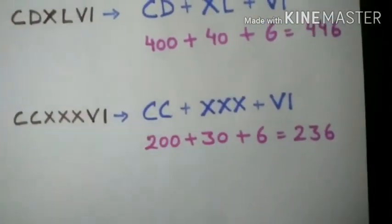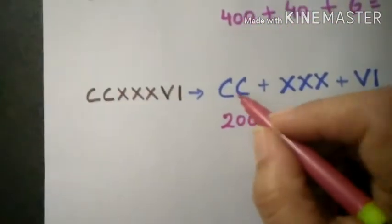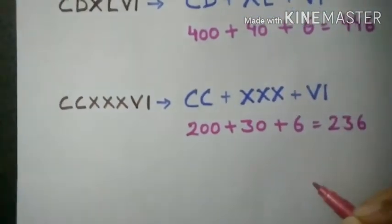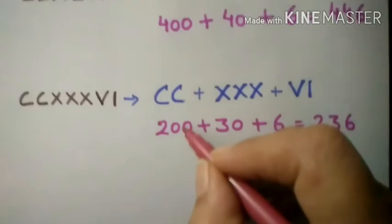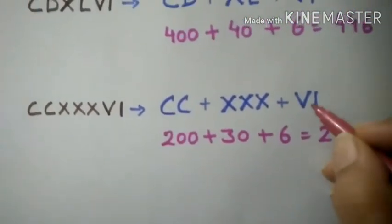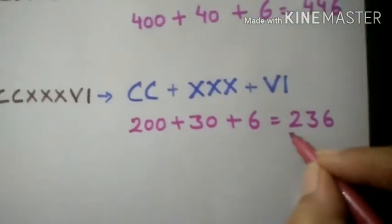Now, see one more example I have done for you here. Two C, three times X and VI means 6. So, two C means 200, three times X means 30, VI means 6. When we add it, we get 236.